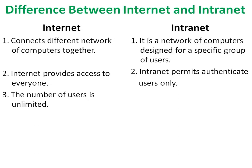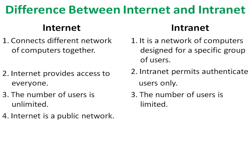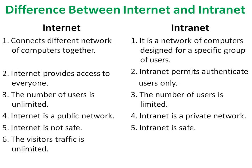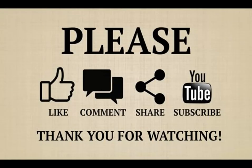The number of users is unlimited in internet, whereas the number of users is limited in internet. Internet is a public network, whereas internet is a private network. Internet is not safe as compared to internet, whereas internet is safe as compared to internet. The visitors' traffic is unlimited in internet, whereas visitors' traffic is limited in internet.